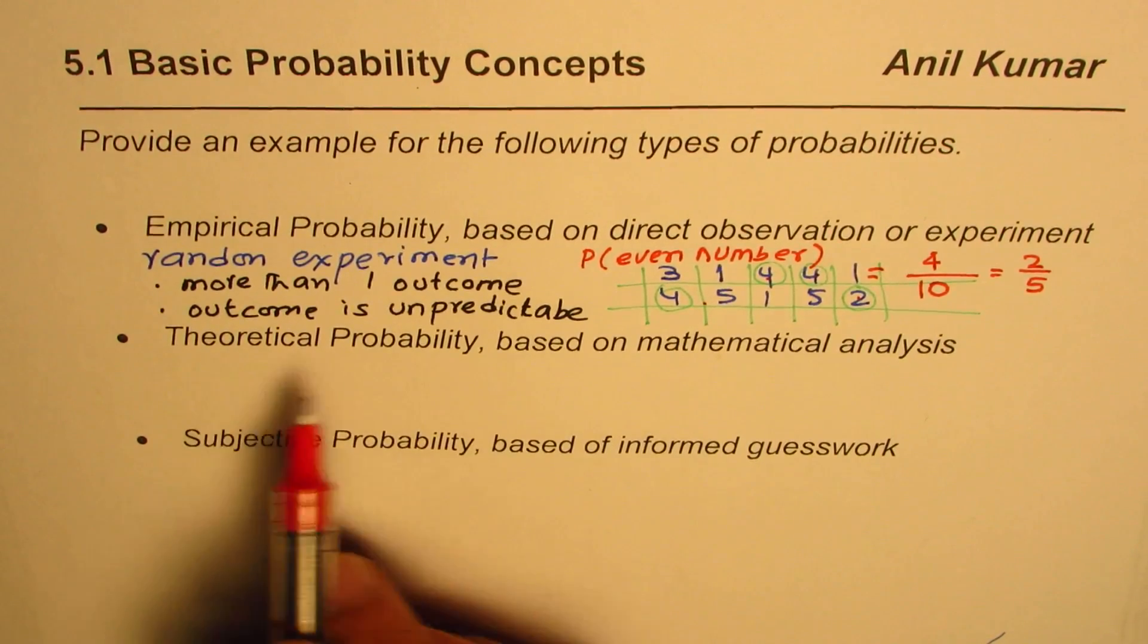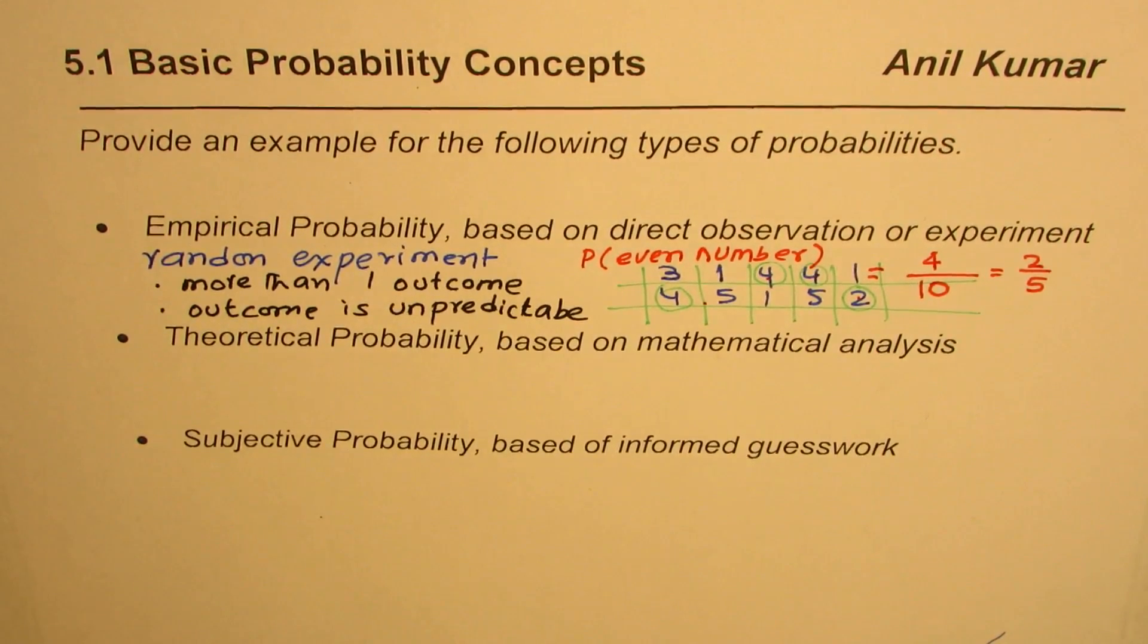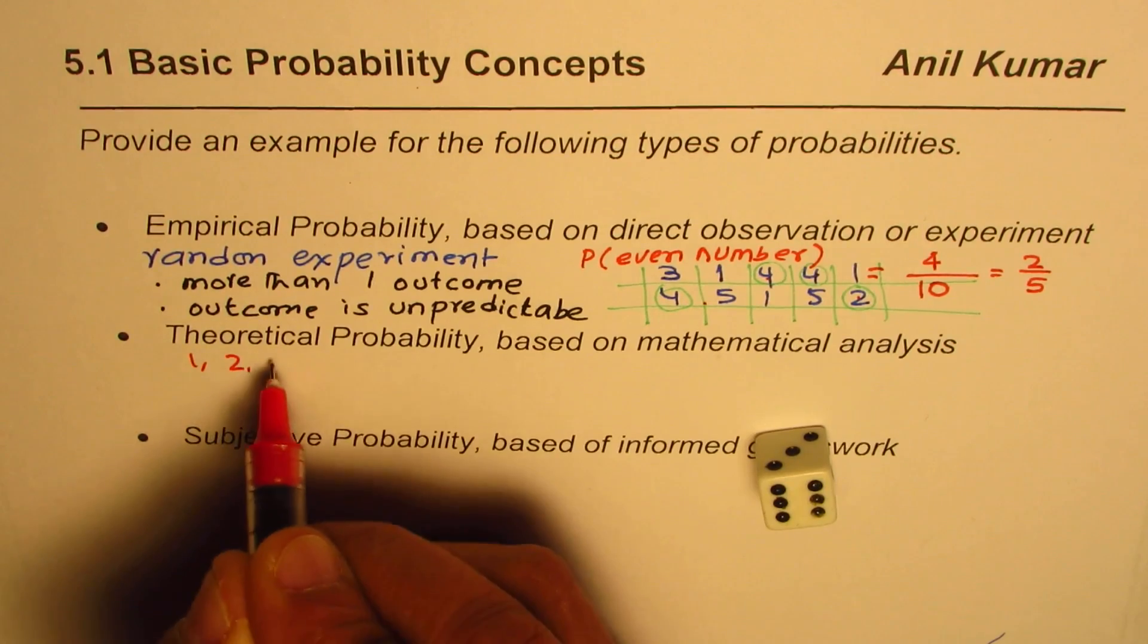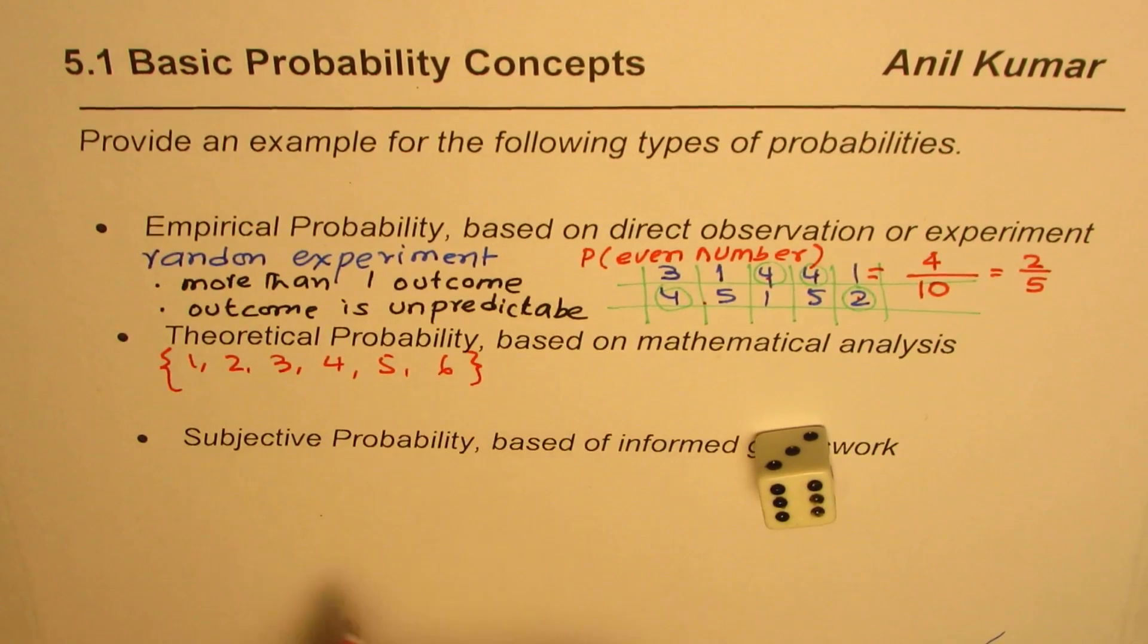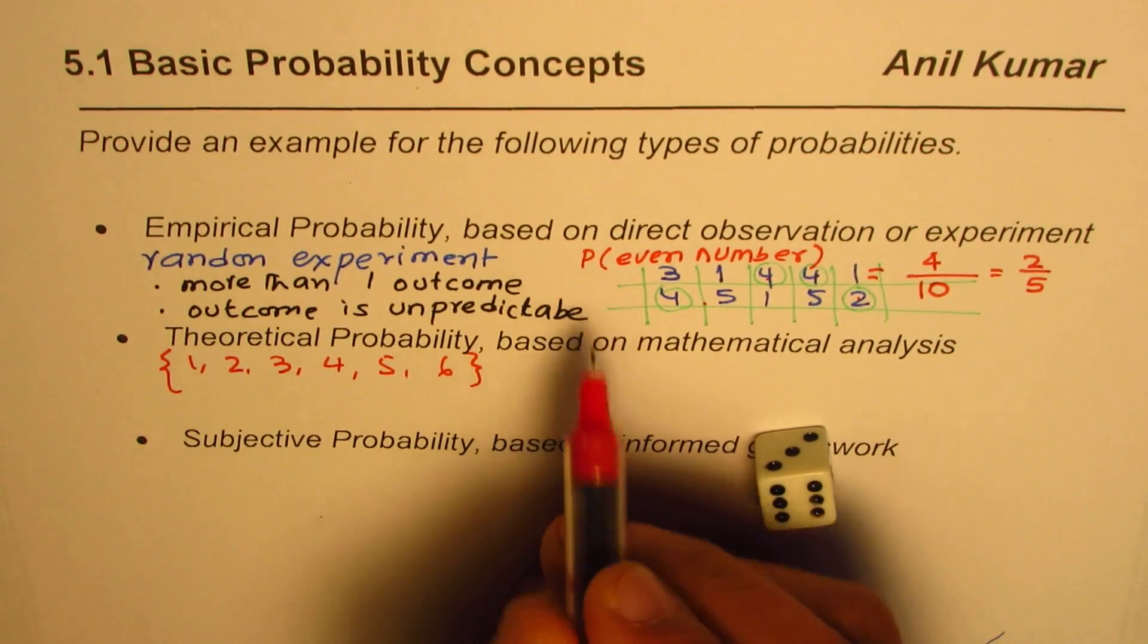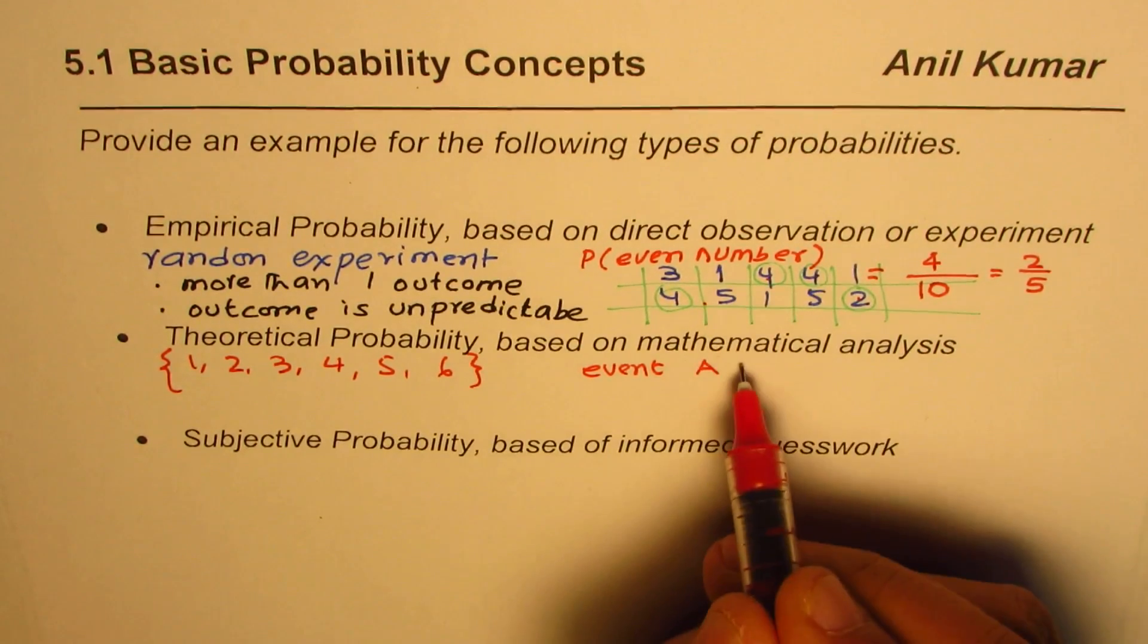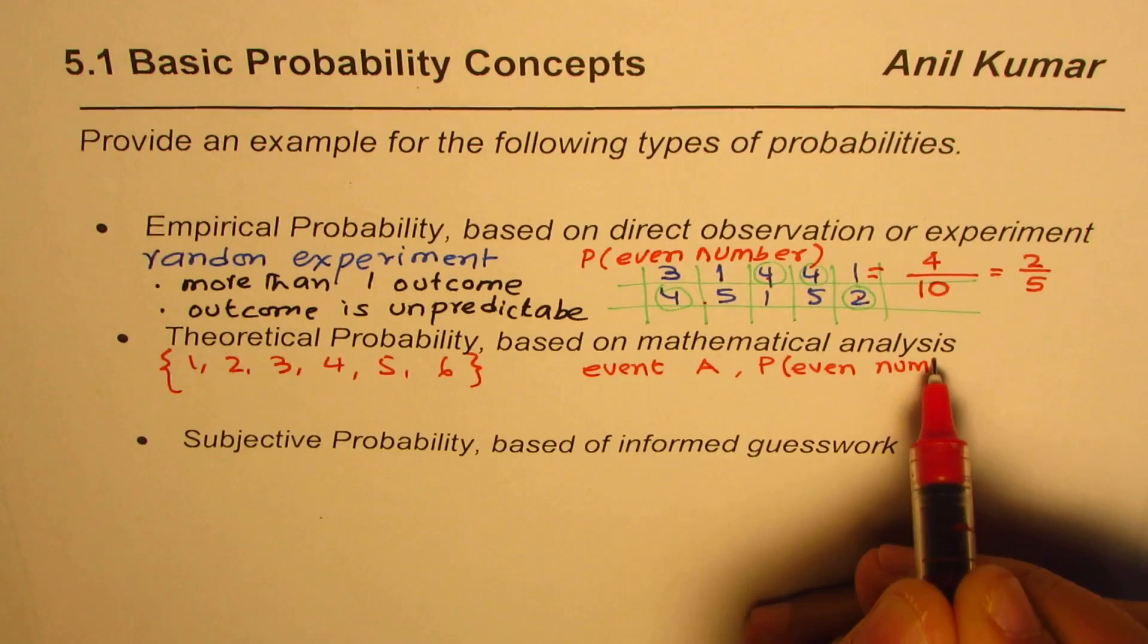Well what is theoretical probability. Theoretical probability is based on mathematical analysis. That is to say when we look at the dice we see that there are total number of outcomes possible numbers one to six. So we say possible numbers are one, two, three, four, five, and six. So these are all the possible numbers. Out of these numbers what are even numbers. So when we have an event we say our event, Event A, is to find the probability for even numbers.